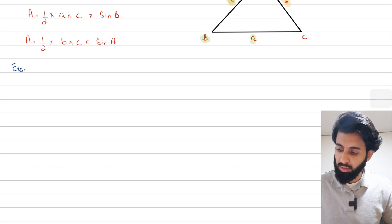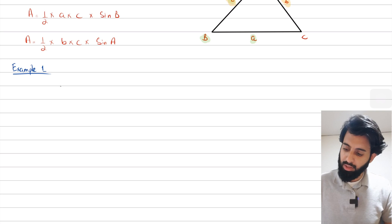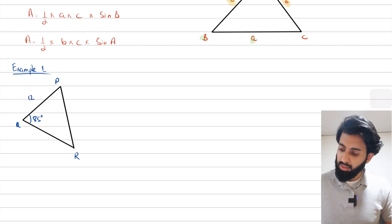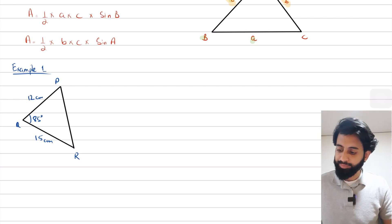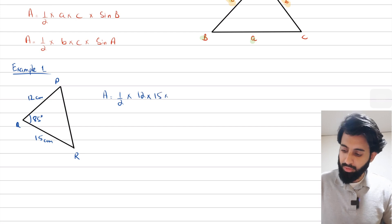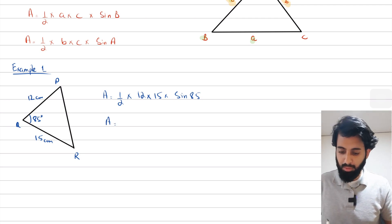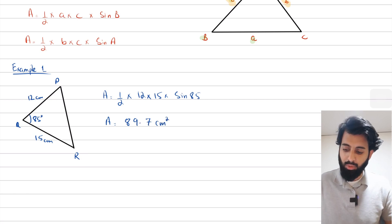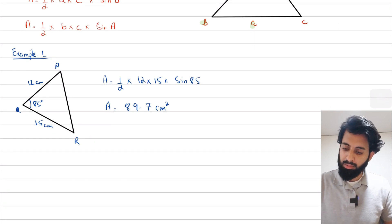Let's look at some examples with actual values. Say we have a triangle with vertices P, Q, and R, where the included angle is 85 degrees, and the two sides are 12 cm and 15 cm. We have two lengths and an included angle, so we apply the formula: half times 12 times 15 times sine 85. That gives 89.65, which rounds to 89.7 cm² to three significant figures.